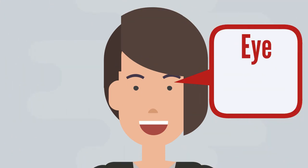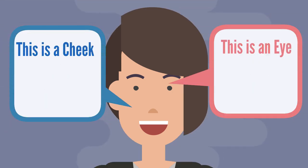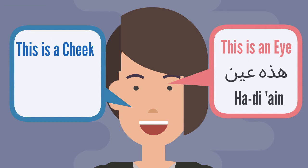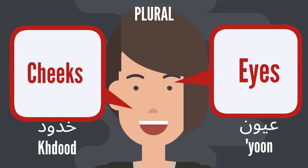Next is eye — ayan. Cheek — khad. This is an eye — haadi ayan. This is a cheek — haada khad. And the plural form for eyes is iyoon. And cheeks — khadud.